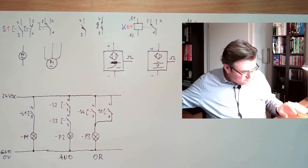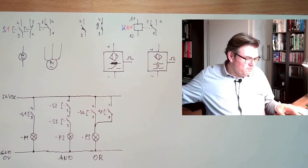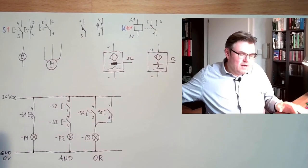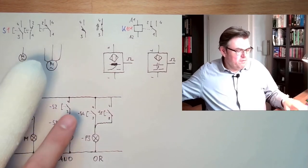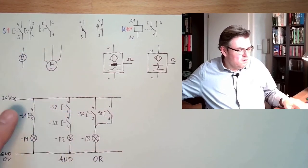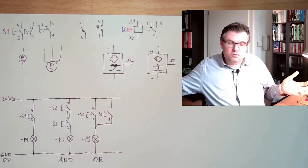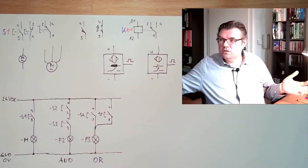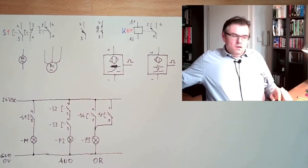I have an AND, I have an OR. Well, a NOT is not very difficult. Because if I want to have a NOT, then I will simply use a normally closed contact. Because then it's opening.